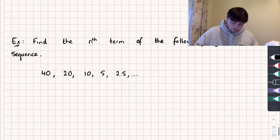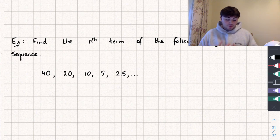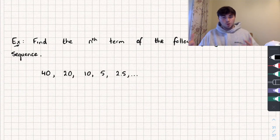Let's now look at another example. So it says, find the nth term of the following geometric sequence. So it goes 40, 20, 10, 5, 2.5, and so on.